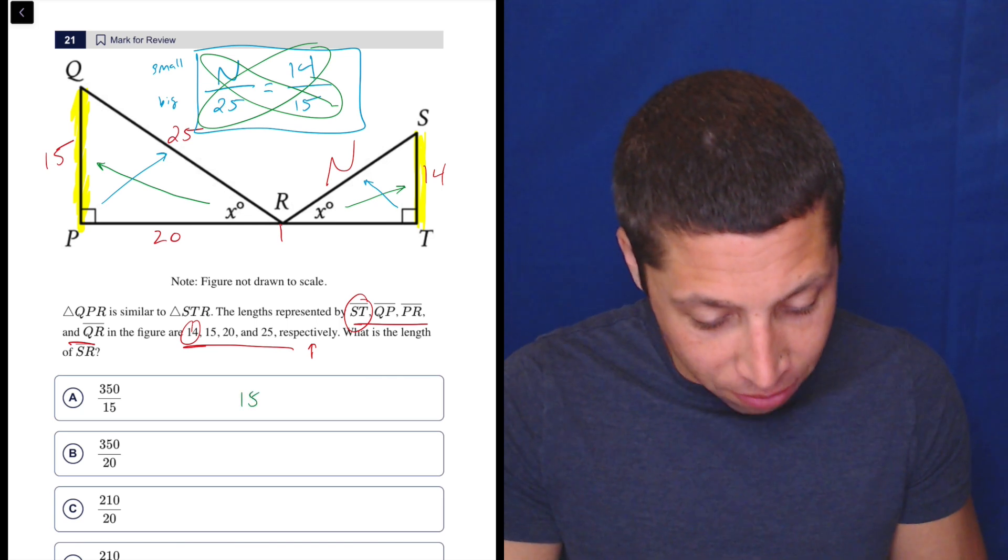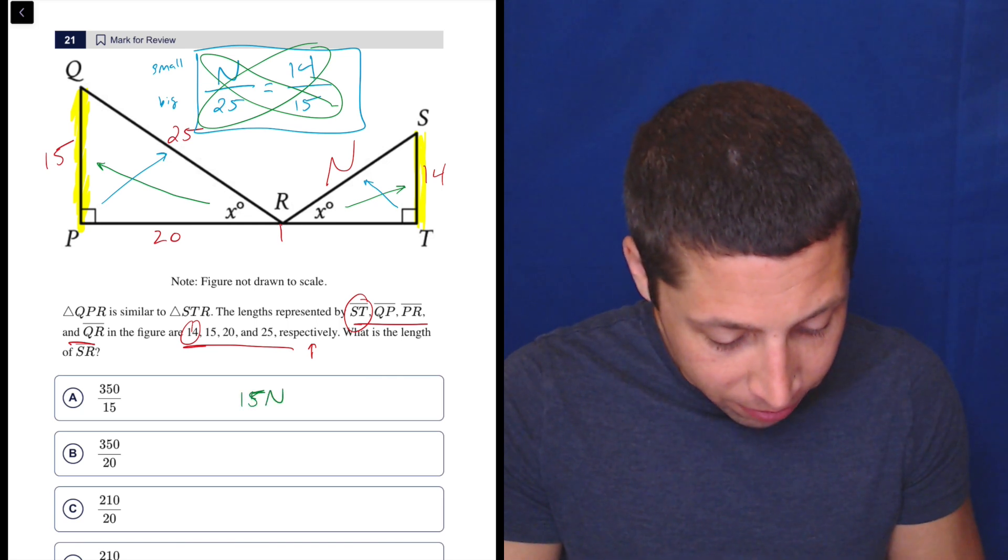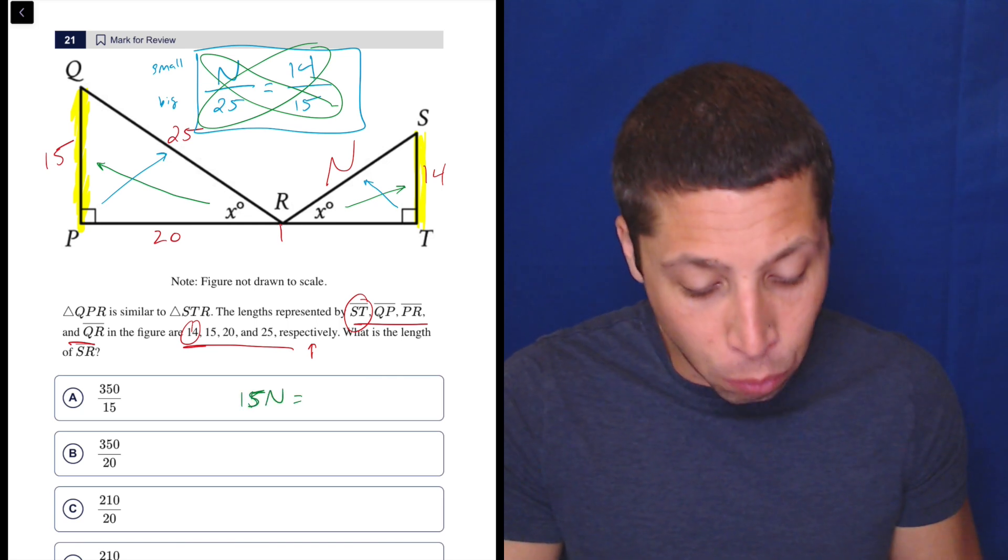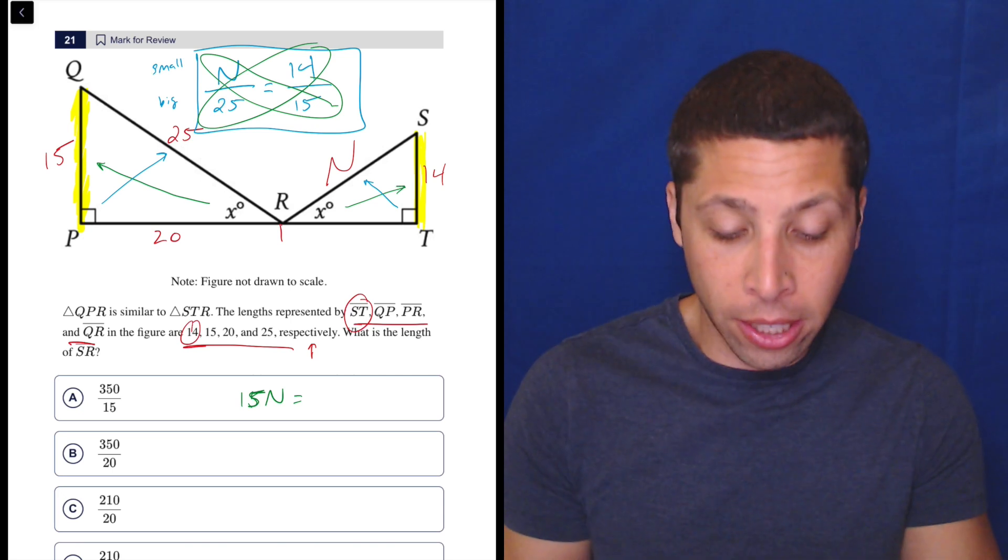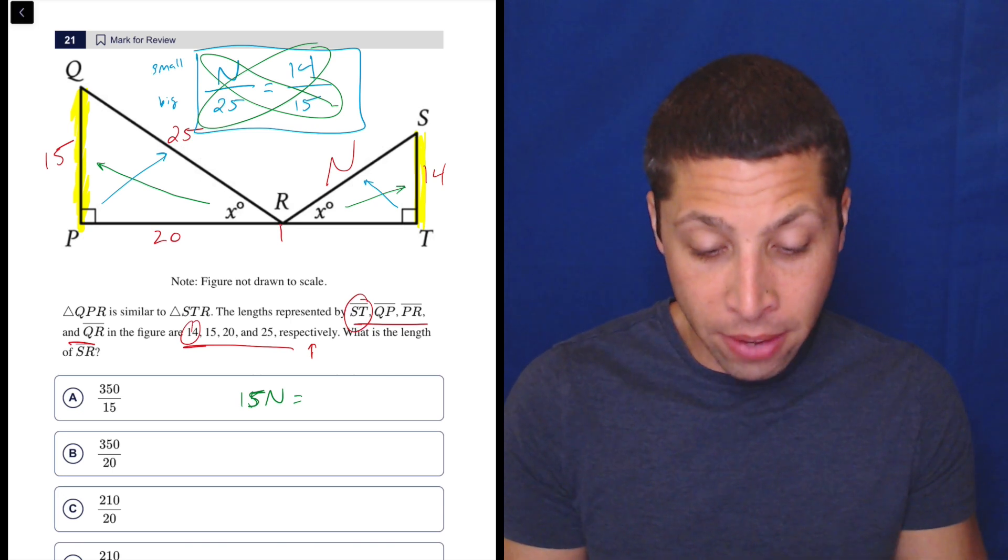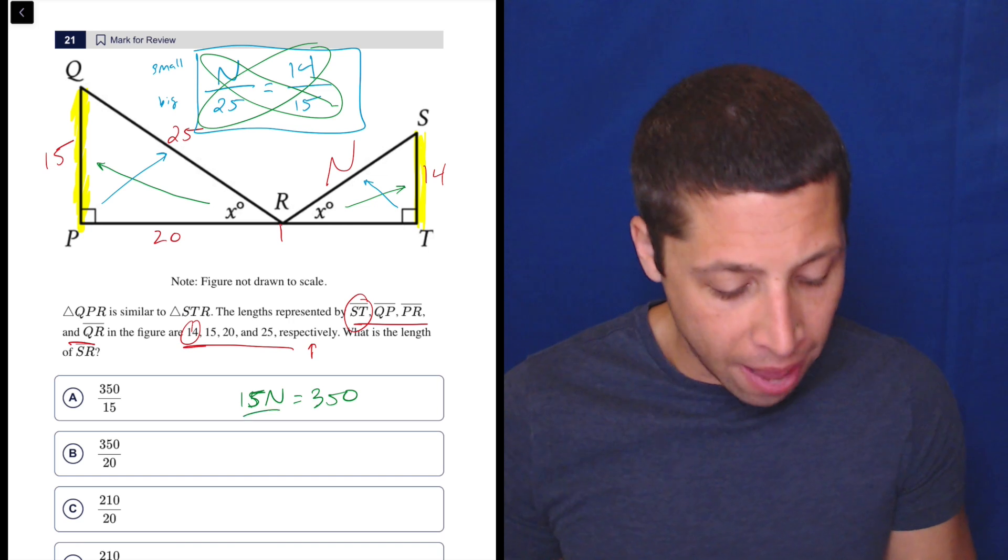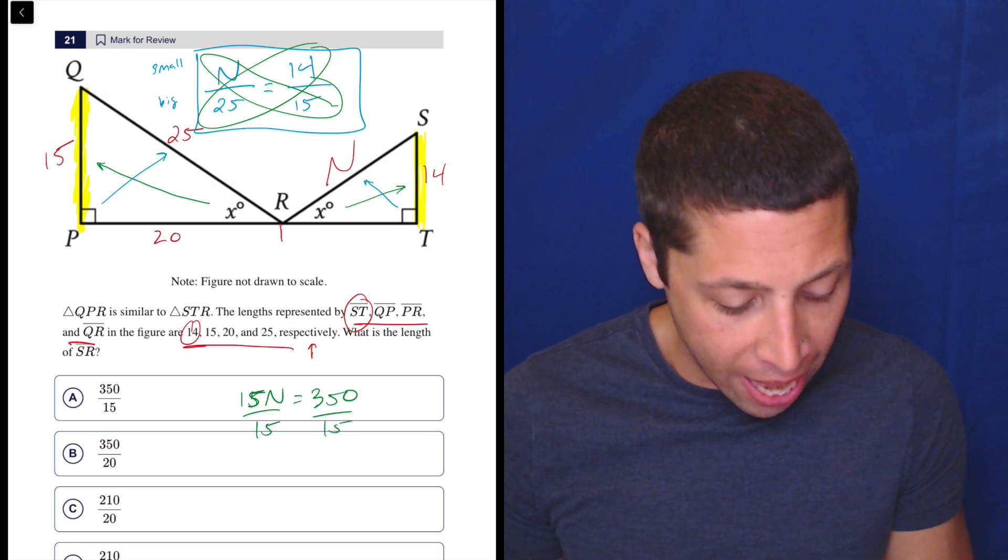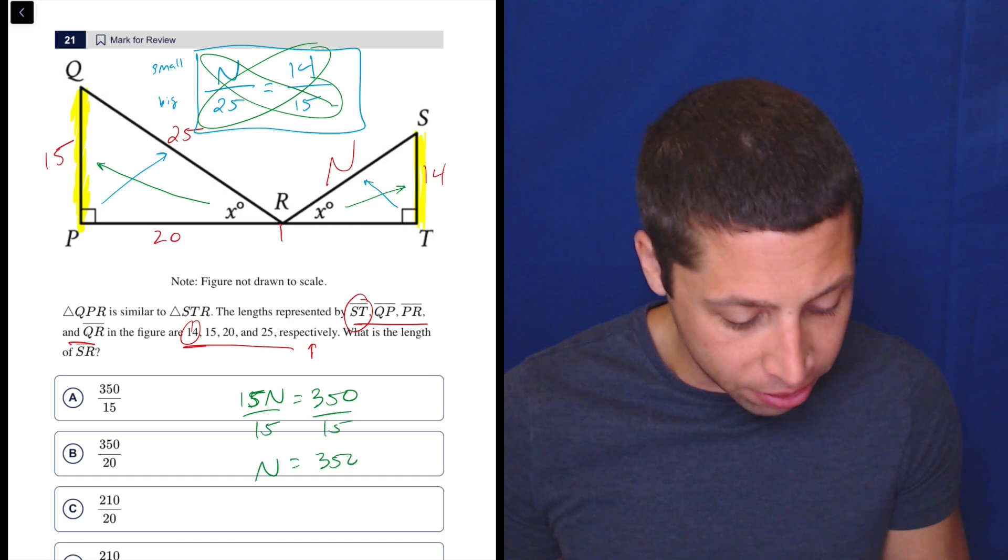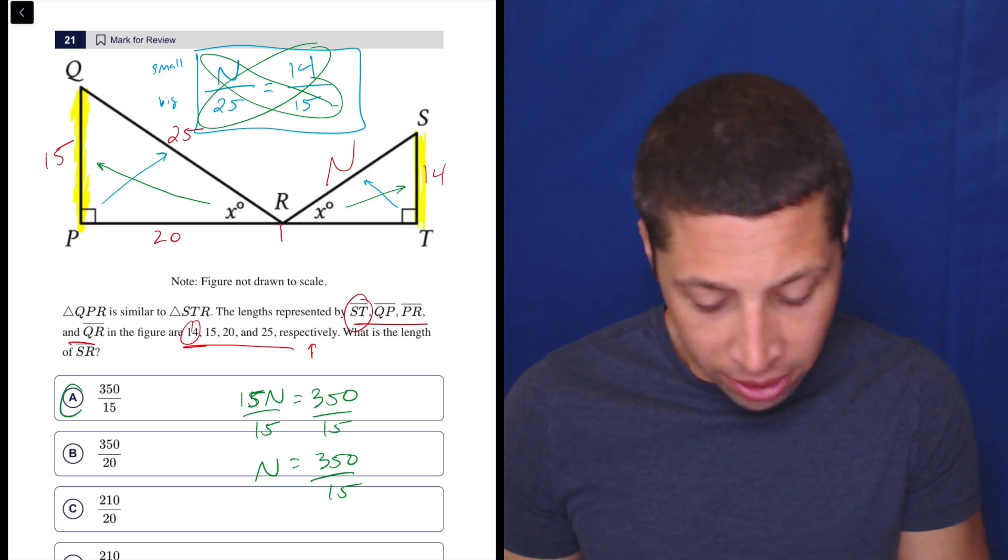N times 15 is 15N. And then 14 times 25, I would just go with regular calculator. 14 times 25 is 350. And then let's divide by 15 to get the N alone. So N is 350 over 15. Is that an answer? Yes.